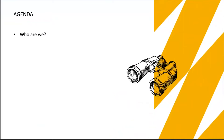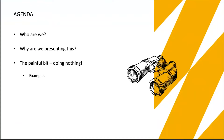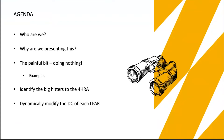So what are we going to talk about today? We're going to talk about who we are, the painful bit if you don't do anything about the 4% annual increase, some examples of what it means to you and how much has been spent that possibly didn't have to be spent. Ways to offset the 4% increase - one of them is dynamically modifying the defined capacity of each LPAR so it changes every time workload increases or decreases. Then we'll have a summary and Q&A, and about a third of the way through we'll have a demonstration.